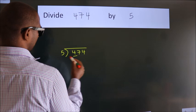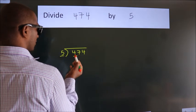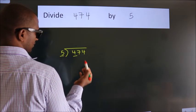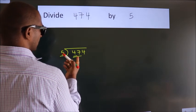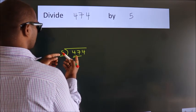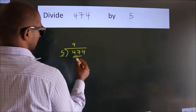Here we have 4, here 5. 4 is smaller than 5. So we should take two numbers: 47. A number close to 47 in the 5 table is 5 nines, 45.